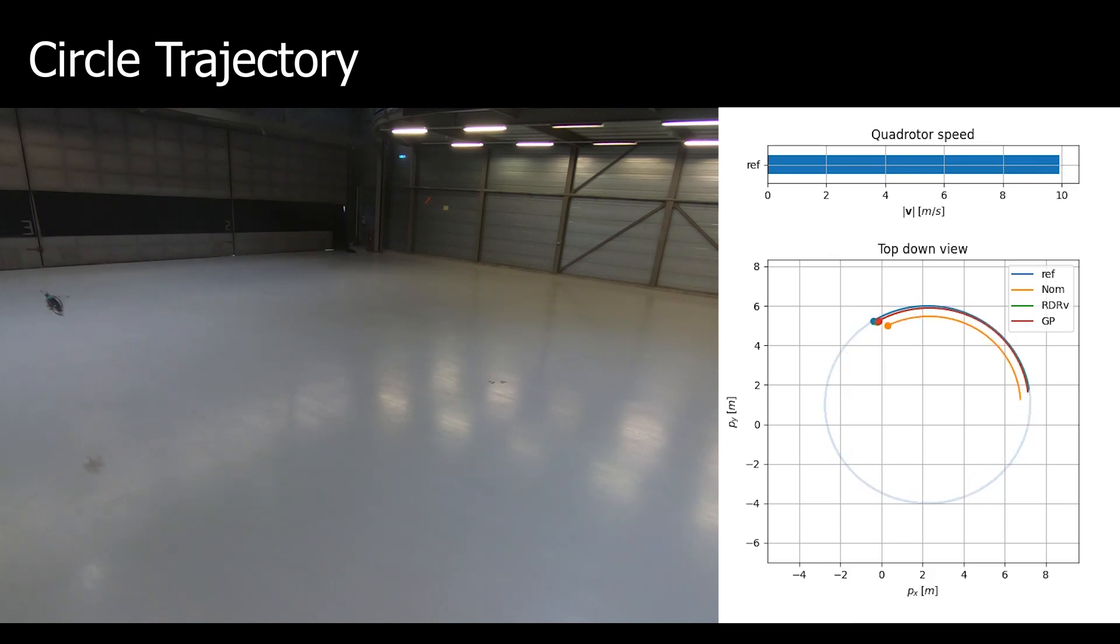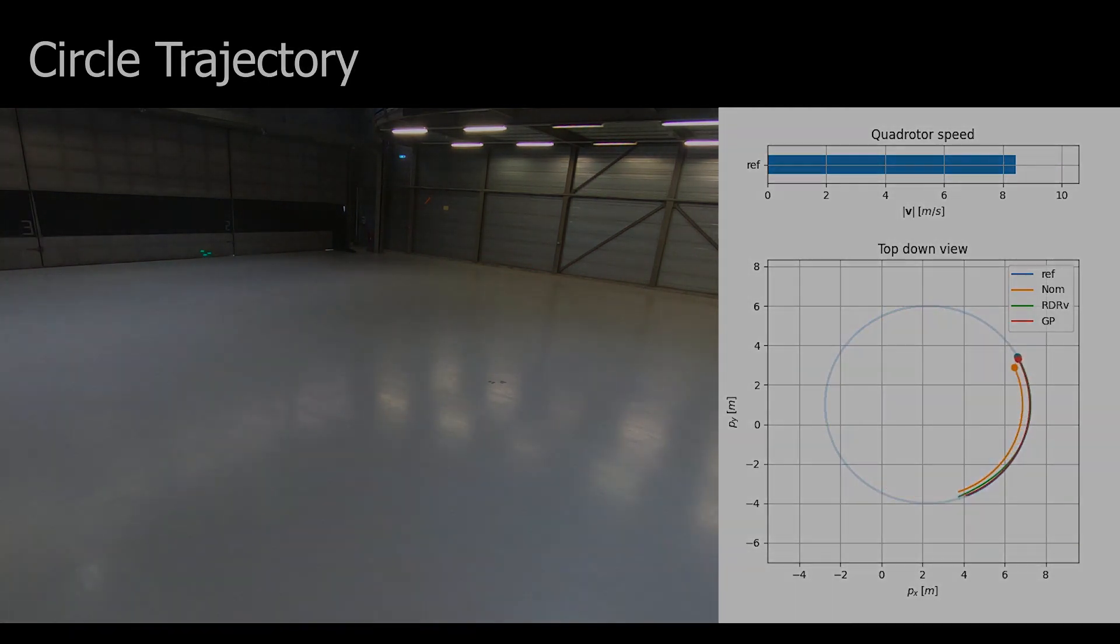As the speed increases, the tracking performance of the baseline controller degrades, while our approach remains closest to the reference, which is marked as REF.